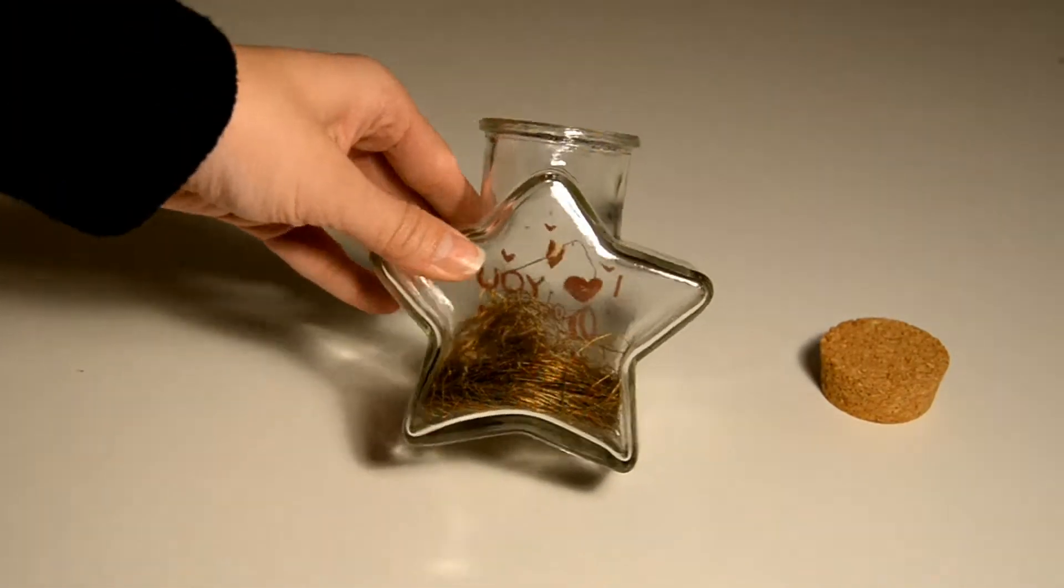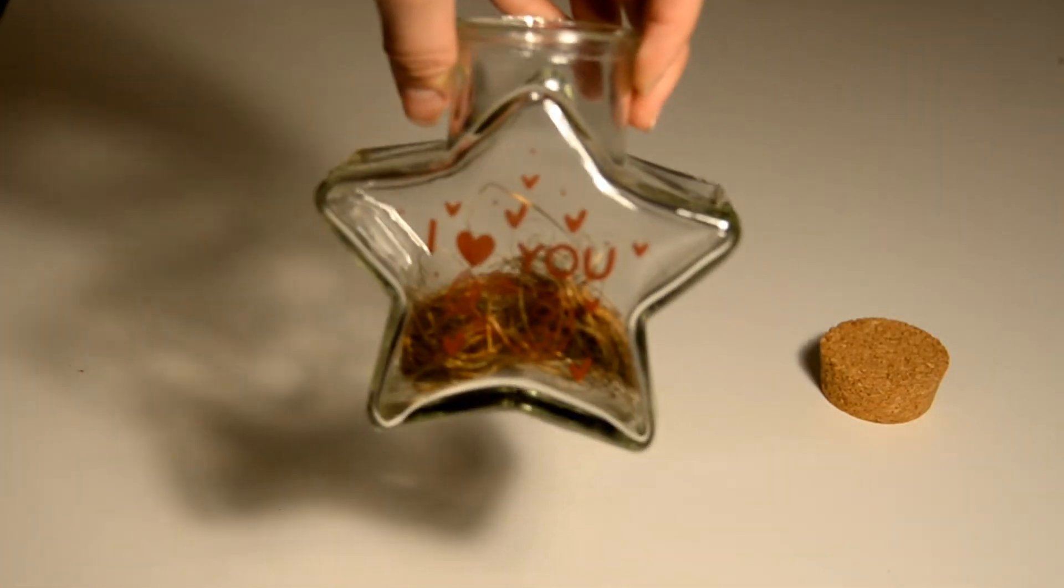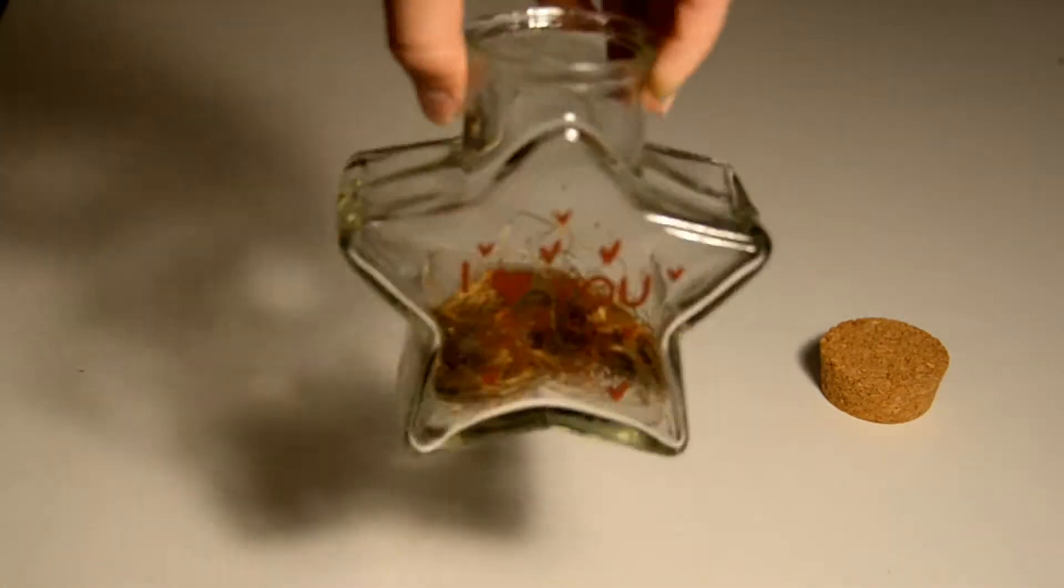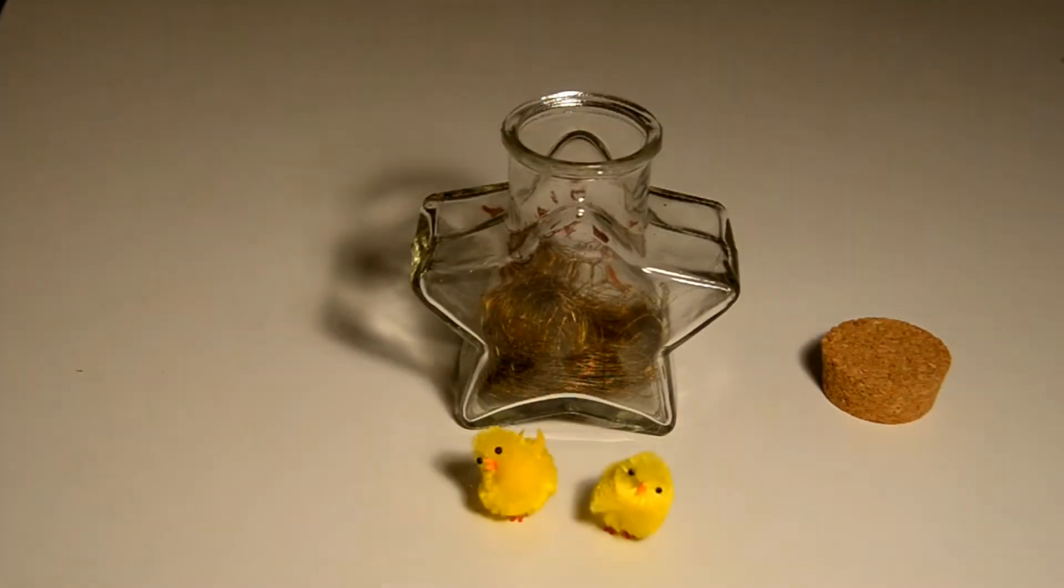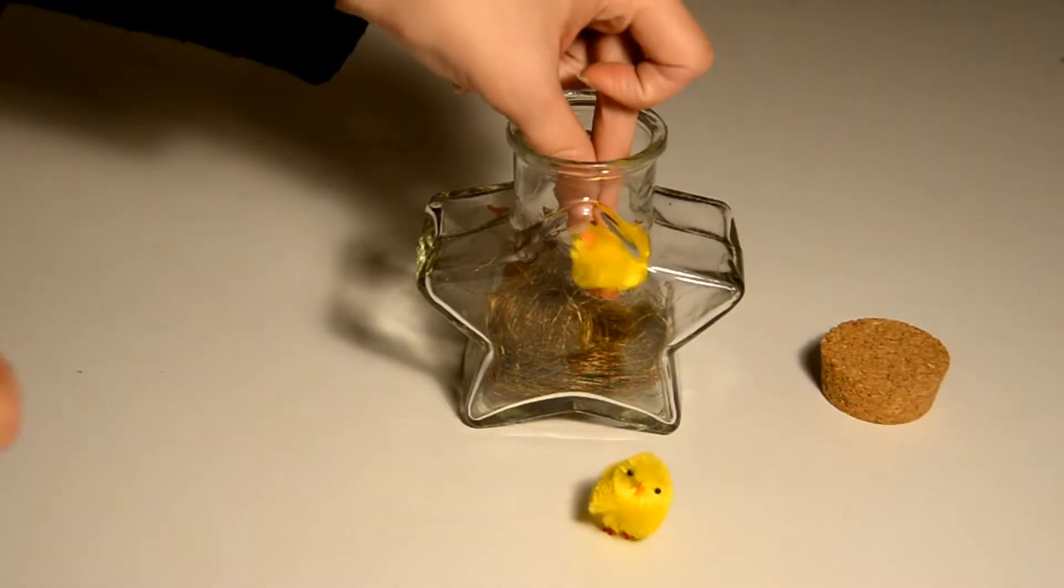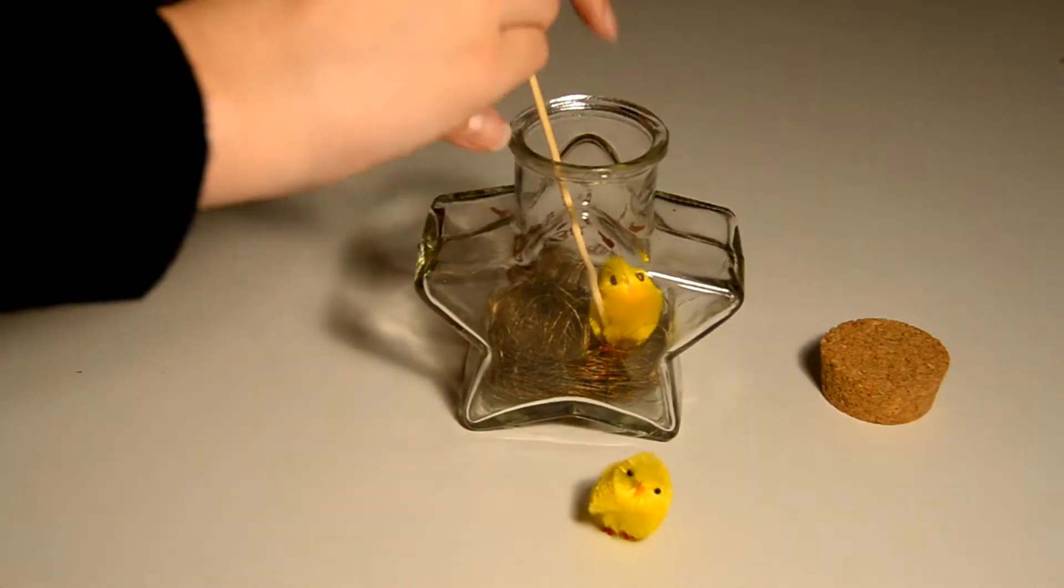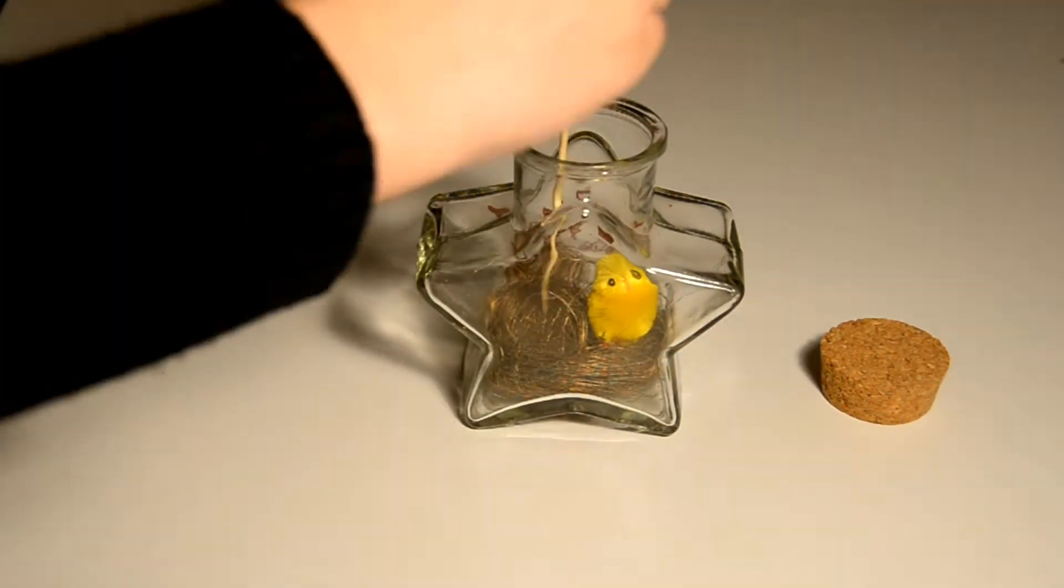Once you are happy with the nest, use the bamboo stick to poke it in place. Now we can add the chickens inside the bottle. Use the bamboo stick to poke everything all in place.